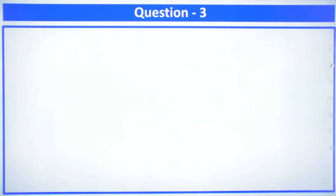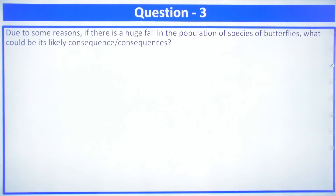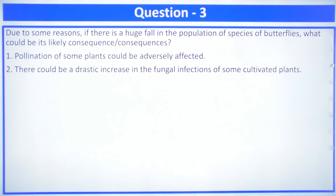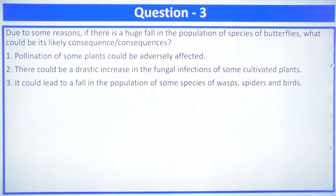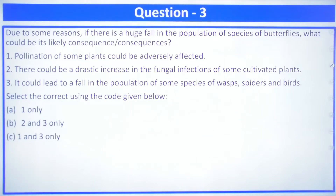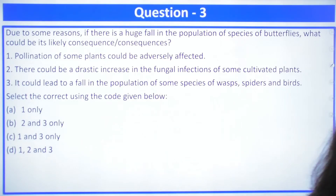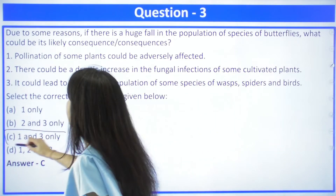Question number 3: due to some reasons, if there is a huge fall in the population of species of butterflies, what could be its likely consequences? First, pollination of some plants could be adversely affected. Second, there could be a drastic increase in the fungal infections of some cultivated plants. Third, it could lead to a fall in the population of some species of wasps, spiders and birds. The answer is one and three.